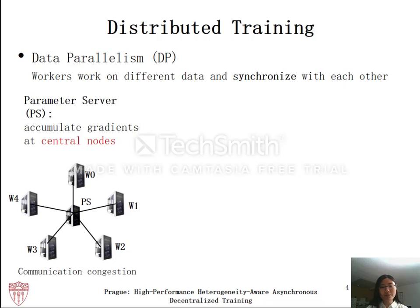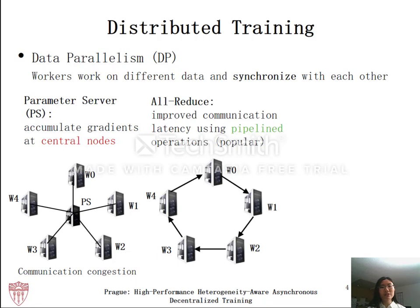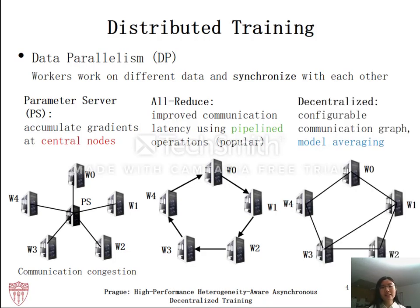The problem with parameter servers is that communication bottleneck easily happens at the central nodes. To deal with this problem, the popular approach nowadays is to leverage low-latency allreduce operations to replace parameter servers. Communication is scheduled in a delicate pipeline way to better utilize the network bandwidth. Recently, decentralized training has also gained considerable attention. Unlike allreduce, it does not have central nodes. The difference is that decentralized training is more flexible, with configurable communication graphs and peer-to-peer model averaging.